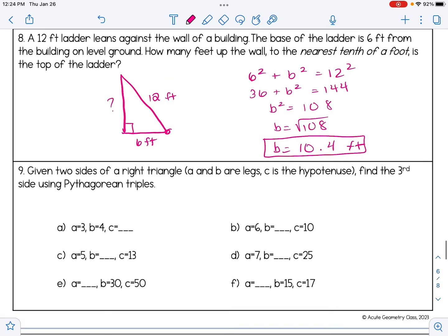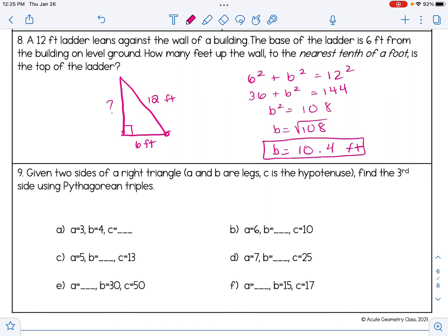All right, for our last problem, we're just going to practice the Pythagorean triples. These can be very helpful to solve any problem that has to do with a right triangle. And there are many of them in geometry. There are also problems on SAT and ACT that could show up that use Pythagorean triples. So it is helpful to use as like a time-saving tool. So number 9 says, given two sides of a right triangle, A and B are legs, C is the hypotenuse, find the third side using Pythagorean triples.